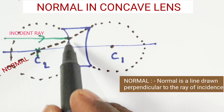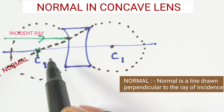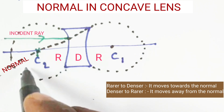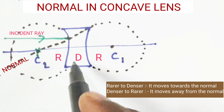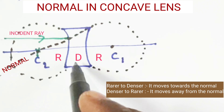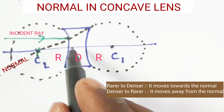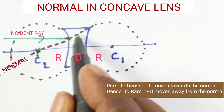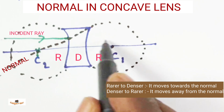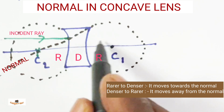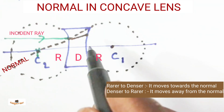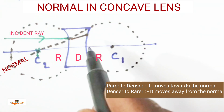This light ray is moving from rarer to denser — from air medium to glass medium. When a ray moves from rarer to denser, it bends towards the normal. This is the normal. Generally it needs to travel in a straight line, but it moves towards the normal like this.